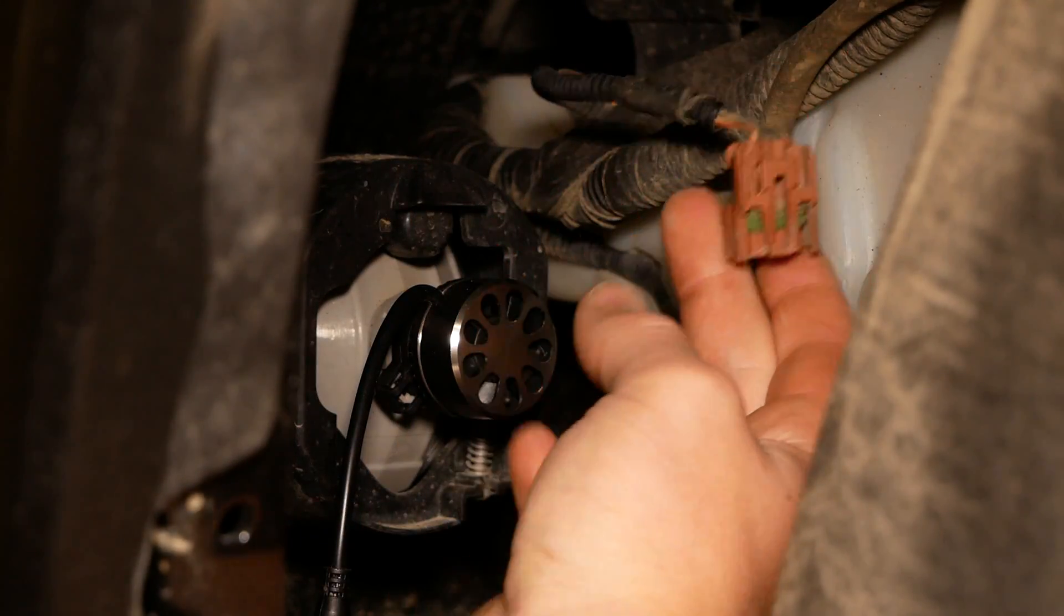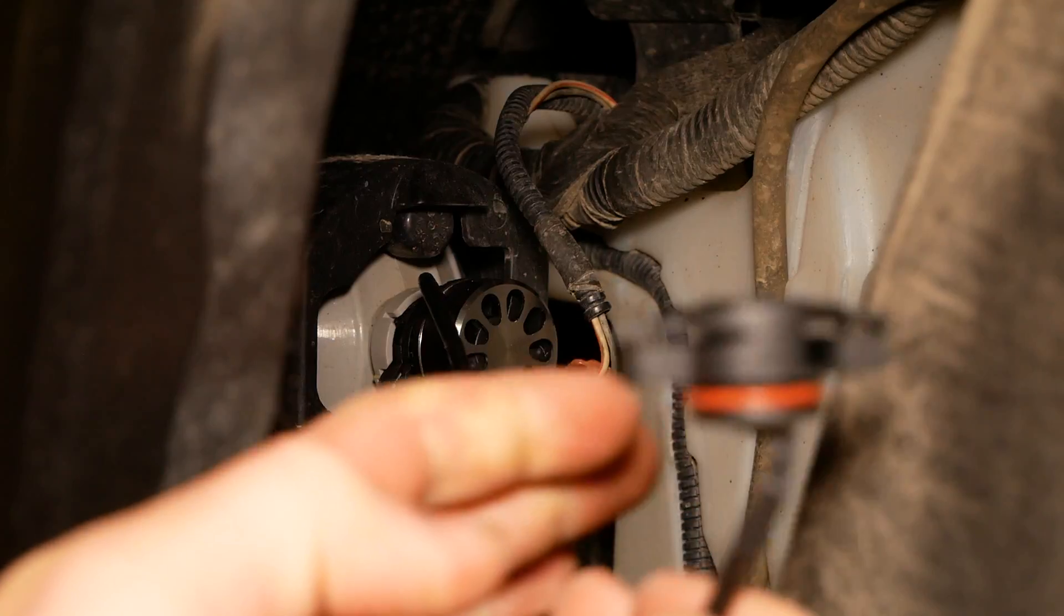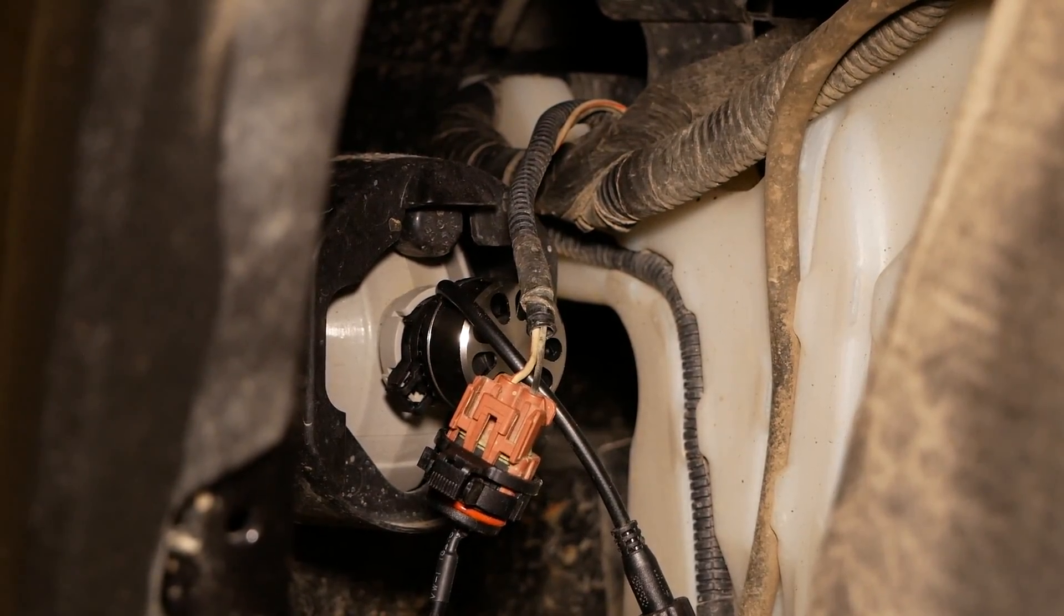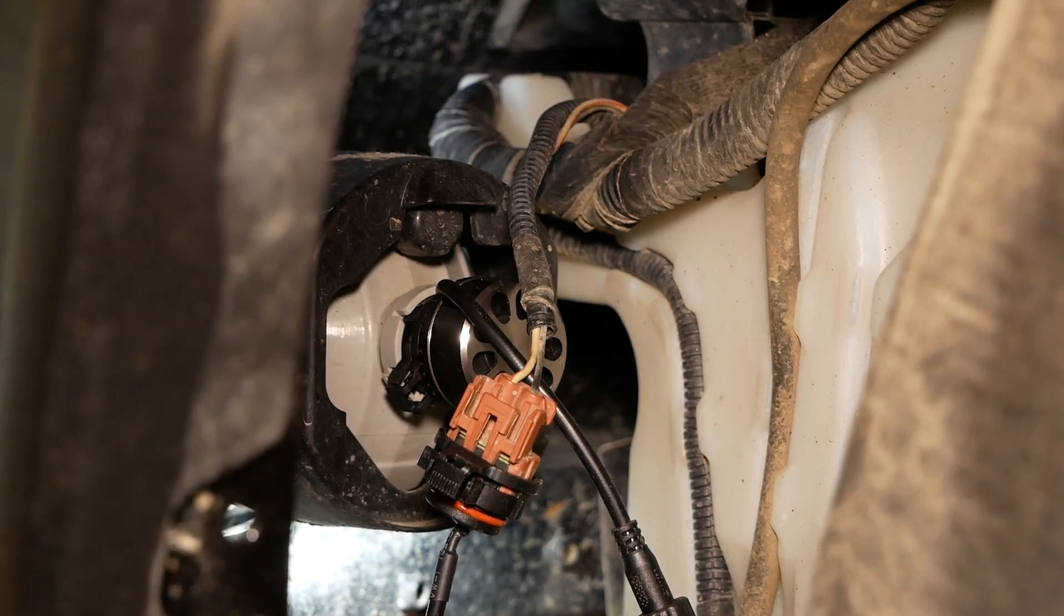Now grab your fog light connector which is going to be the red connector that we disconnected. Take the other end of your power adapter. Once you have that connected go ahead and flip on your fogs to verify that the bulb is working.